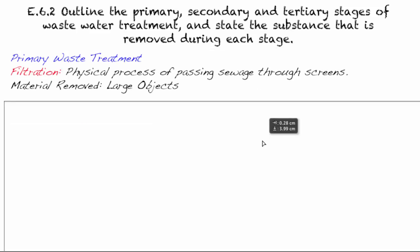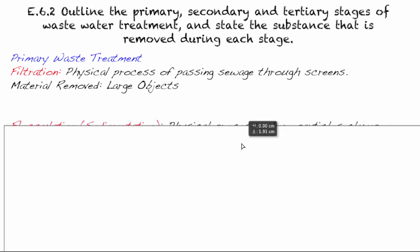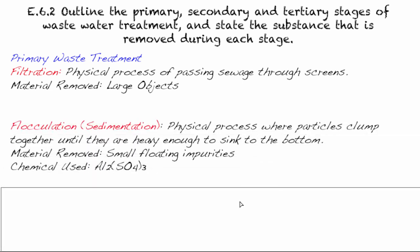So let's take a look at that one. So the primary waste, first we had filtration, that's a physical process of pushing the sewage through the screens, and then you remove the large objects. Flocculation, which is the sedimentation, that's a physical process. It's not actually a chemical reaction, it's physical, where particles clump together until they are heavy enough to sink to the bottom. And so what you've removed there are small floating impurities. And the chemical used there is aluminum sulfate, or alum.